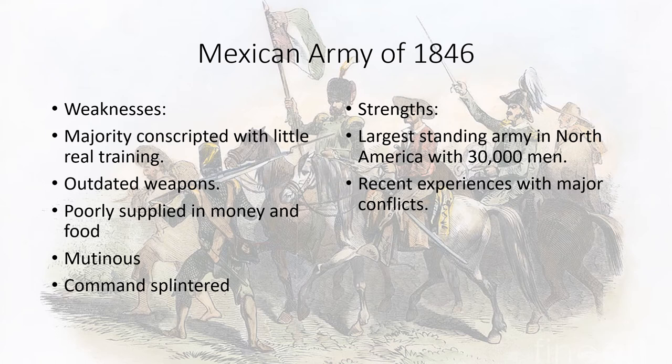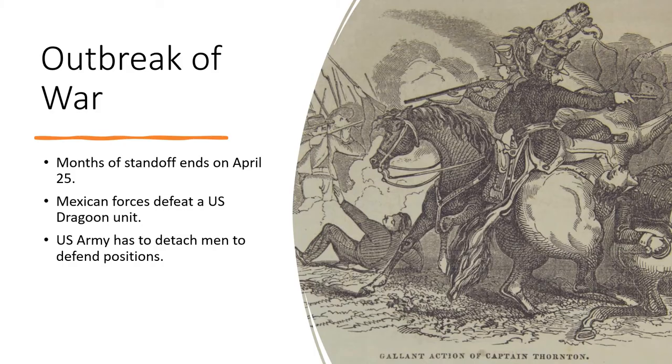Perhaps the greatest weakness was that the generals were divided, with the commander, Mariano Arista, and the second in command, Pedro Ampudia, bickering with each other and dividing the army's loyalties amongst themselves.